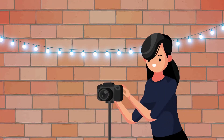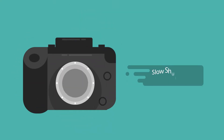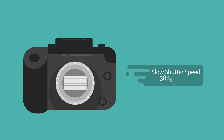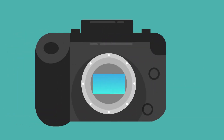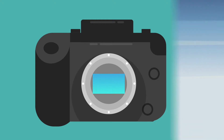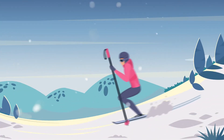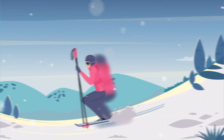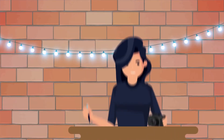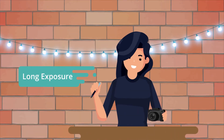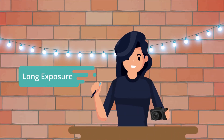The opposite is true when using slow shutter speeds. When you use slow shutter speeds, such as 1 second or 30 seconds, you leave the shutter open long enough to record objects as they move across the frame. This transforms moving objects into traces of soft and blurry textures. In photography, a slow shutter speed setting is referred to as long exposure.